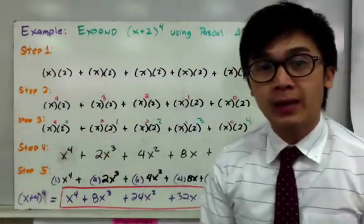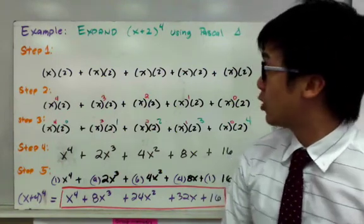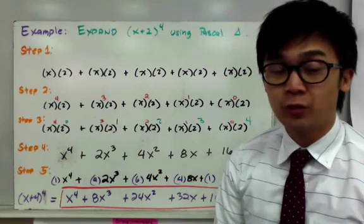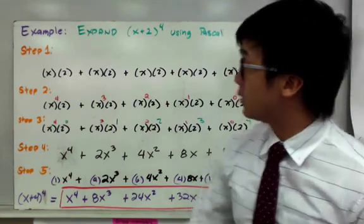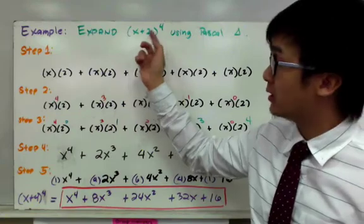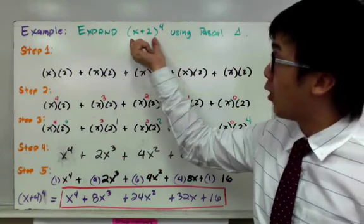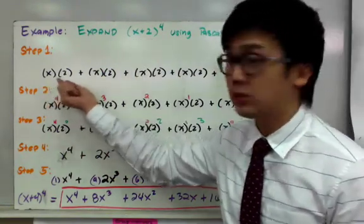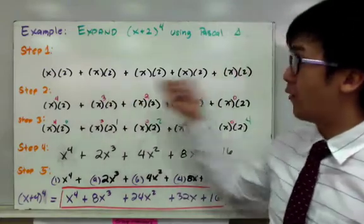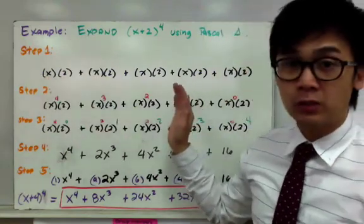This is our first example on how we expand a binomial using the Pascal's Triangle. Let's say we have x plus 2 raised to the fourth power. To use the Pascal's Triangle, we'll follow a series of steps so we don't need to FOIL x plus 2 by itself four times. So x will be your a and 2 will be your b, and since your highest exponent is 4, you'll have five sets of x's and 2's in your expansion.